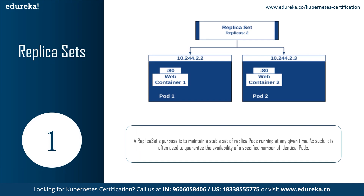Let us now discuss some of the popular controllers available in Kubernetes. First off, we have ReplicaSet. A ReplicaSet's purpose is to maintain a stable set of replica pods running at any given time, often used to guarantee the availability of a specified number of identical pods. A Deployment is a higher-level concept that manages ReplicaSets and provides declarative updates to pods along with many other useful features. Therefore, we recommend using Deployment rather than directly using ReplicaSet — you may never need to manipulate ReplicaSet objects directly; instead, use a Deployment instance.